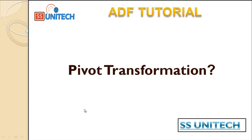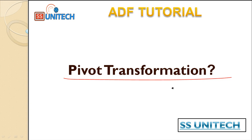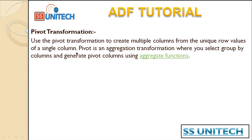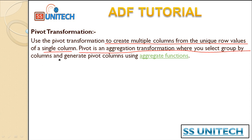Hey guys, welcome to SSUniTech. Today we are going to see about the pivot transformation in data flows. So what is pivot transformation? We use the pivot transformation to create multiple columns from the unique row values of a single column. The pivot is an aggregation transformation where you can group by columns and generate the pivot column using the aggregate function.